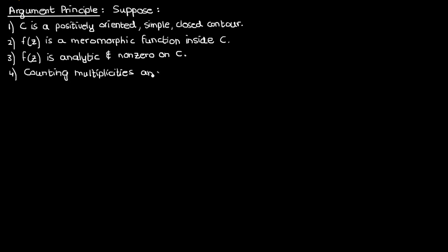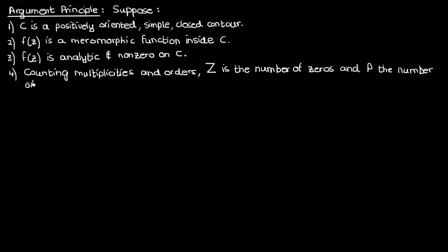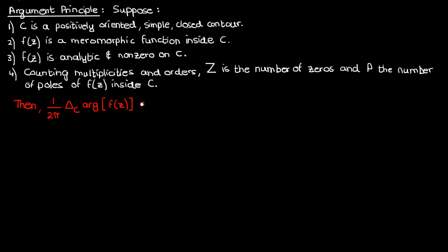Finally, suppose that capital Z and P represent the number of zeros and poles of f of z inside C, respectively. I'll explain later what it means when it says counting multiplicities and orders. If all these assumptions are true, then the winding number of f of z as we traverse the image of the curve C is equal to the number of zeros minus the number of poles of f of z inside C, counting multiplicities and orders of course.